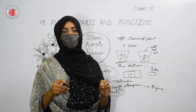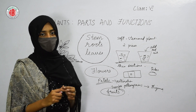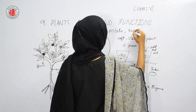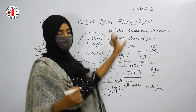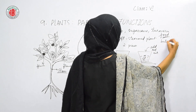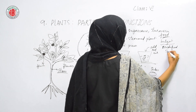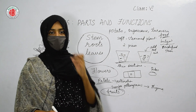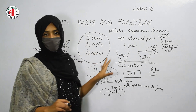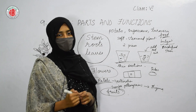One more point about stems: some stems of plants like potato, sugarcane, and turmeric store food in them. Due to the storage of food they bulge out, and these types of stems are called modified stems. In this chapter we have discussed the structure and functions of roots, leaves, stems, and also some points about flowers.